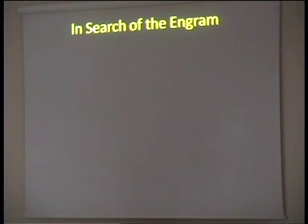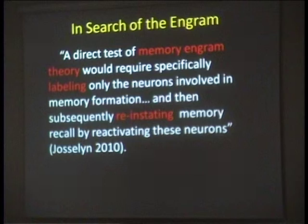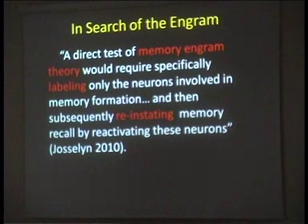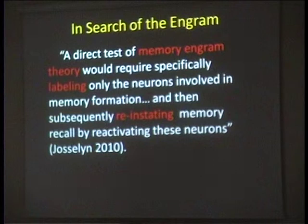Young neuroscientist Sina Jocelyn rephrased this in one of her reviews, stating that a direct test of memory engram theory would require specifically labeling only the neurons involved in memory formation — memory encoding — and then subsequently reinstating memory recall by reactivating those neurons.